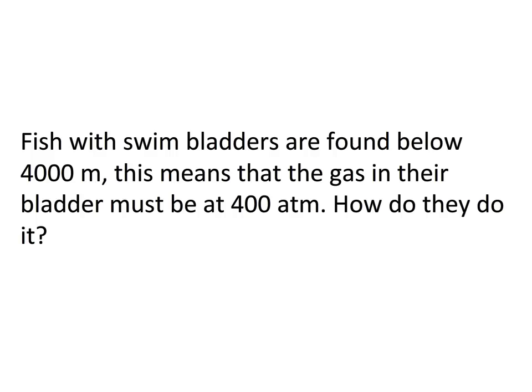The swim bladder lining is coated with guanine crystals or platelets, making it gas impermeable. The gas inside is mostly oxygen, sometimes argon. Fish with swim bladders are found below 4,000 metres, meaning the gas pressure must exceed 400 atmospheres — twice the 200 atmospheres found in a standard diving tank. The force of that diving tank gas is enough to punch a hole through a concrete wall, so the pressures involved are enormous.